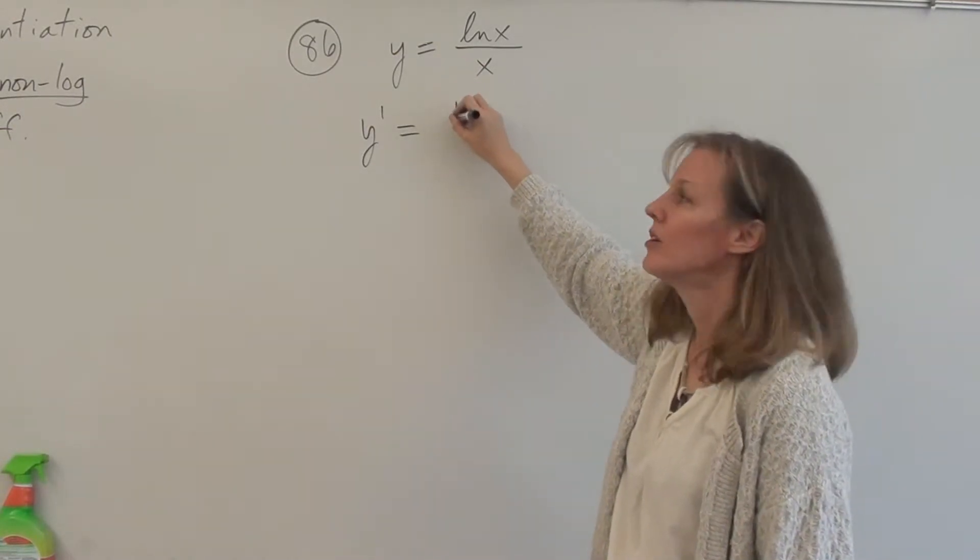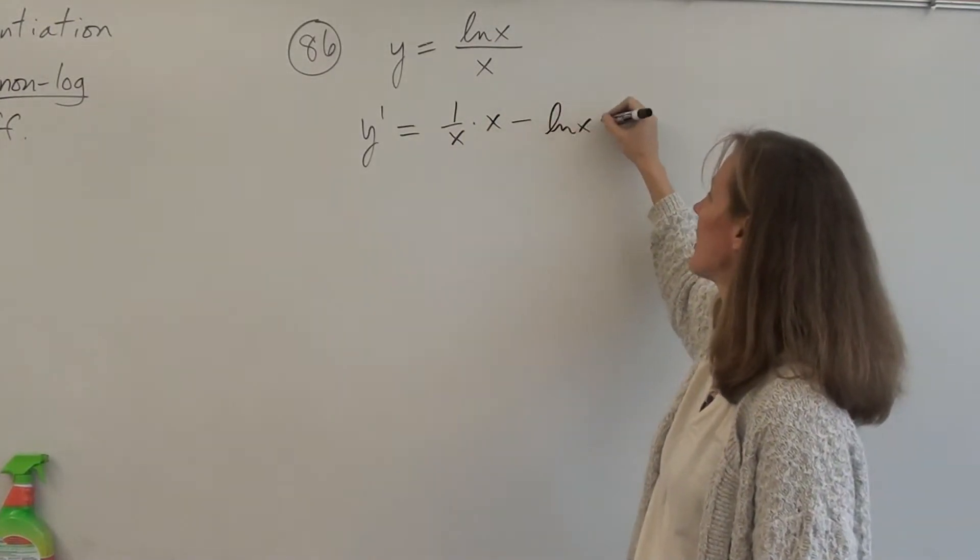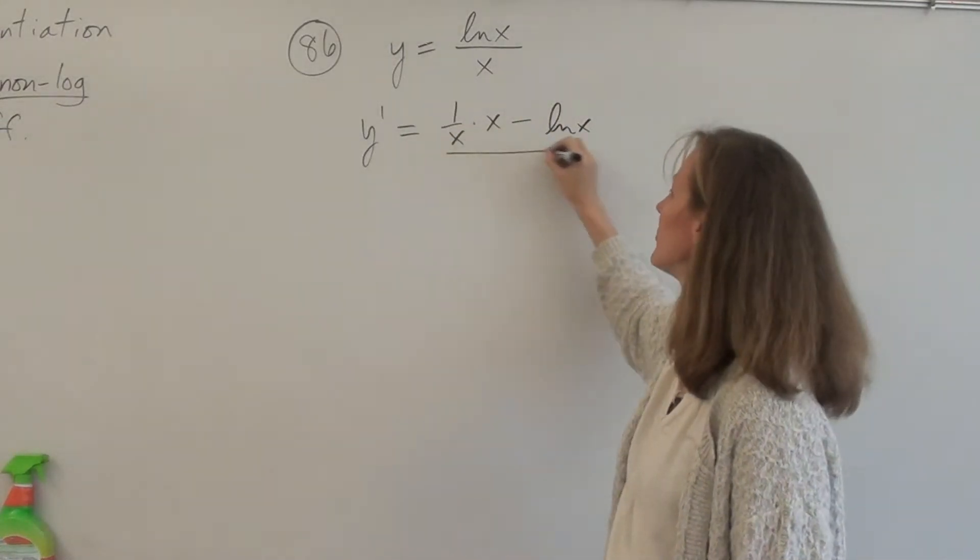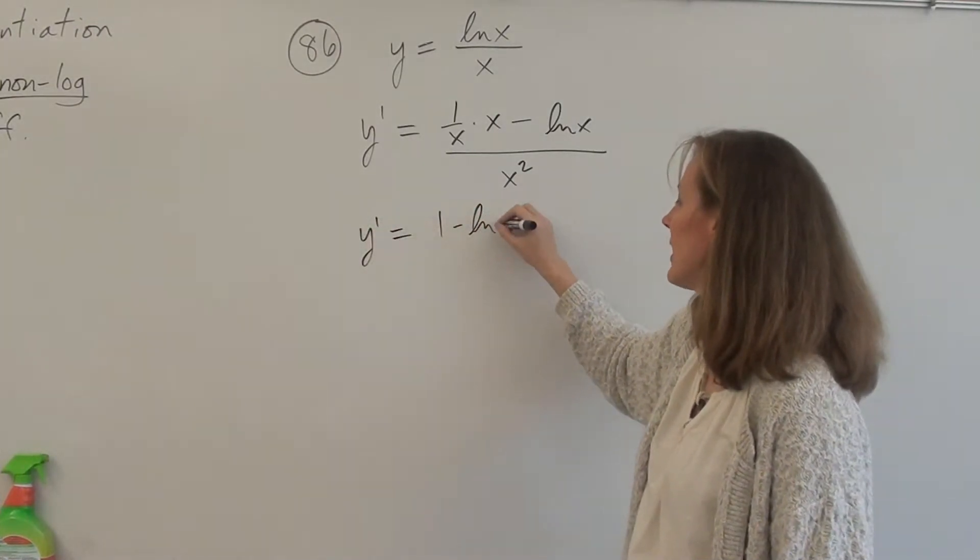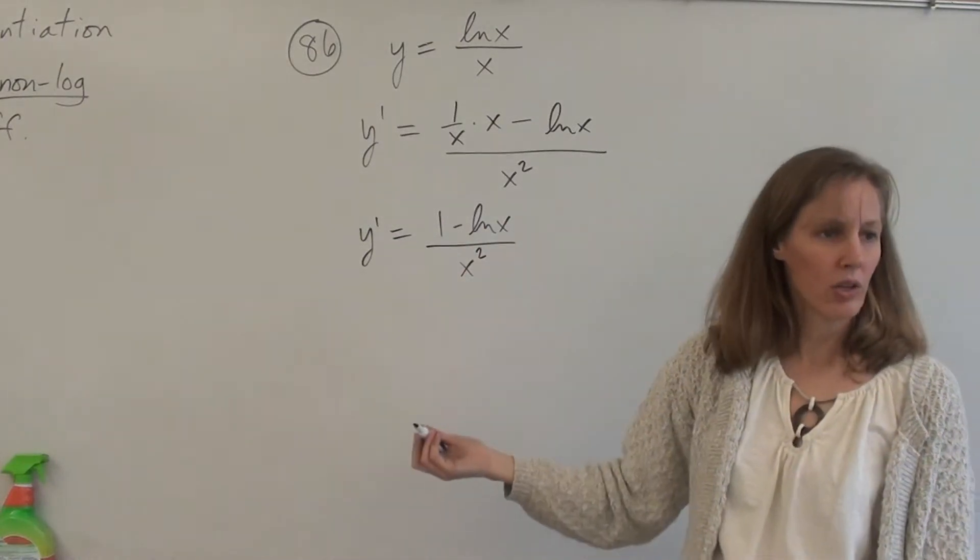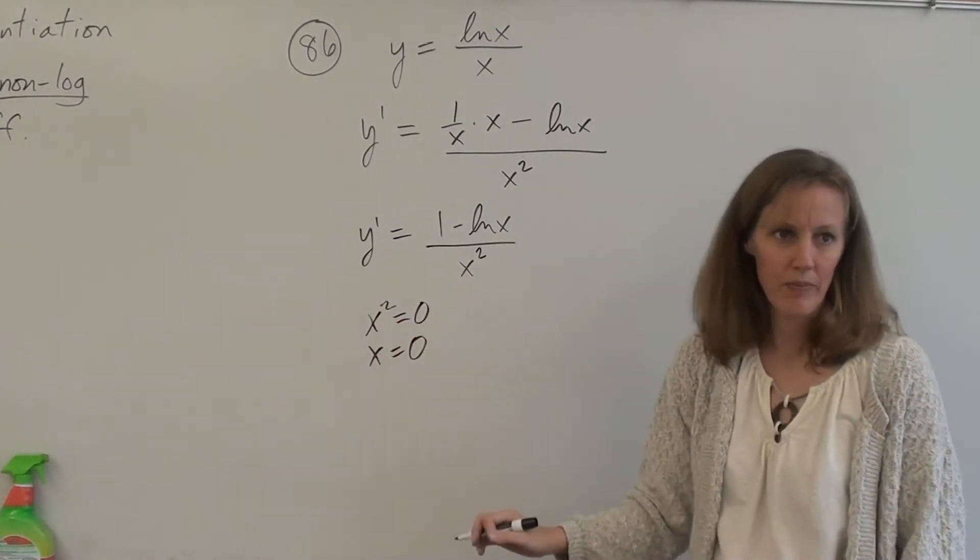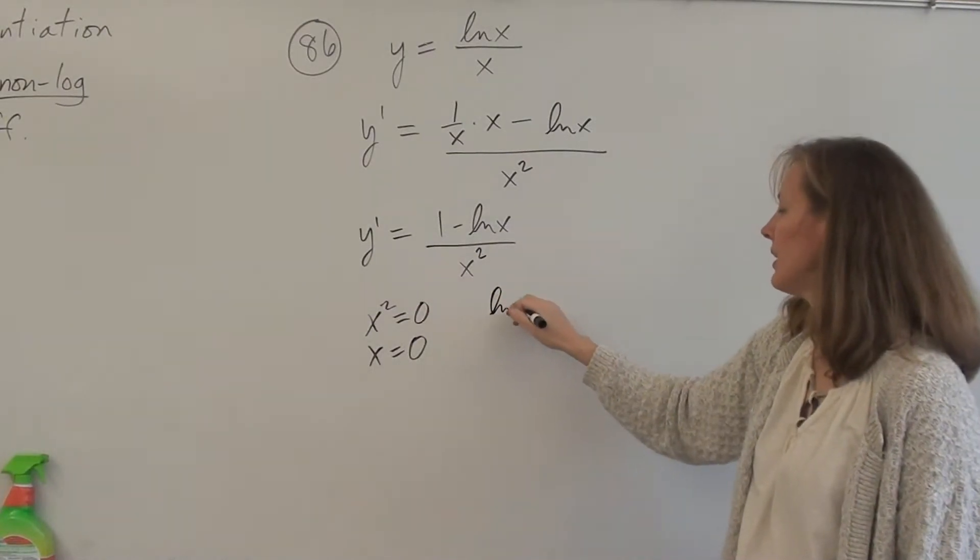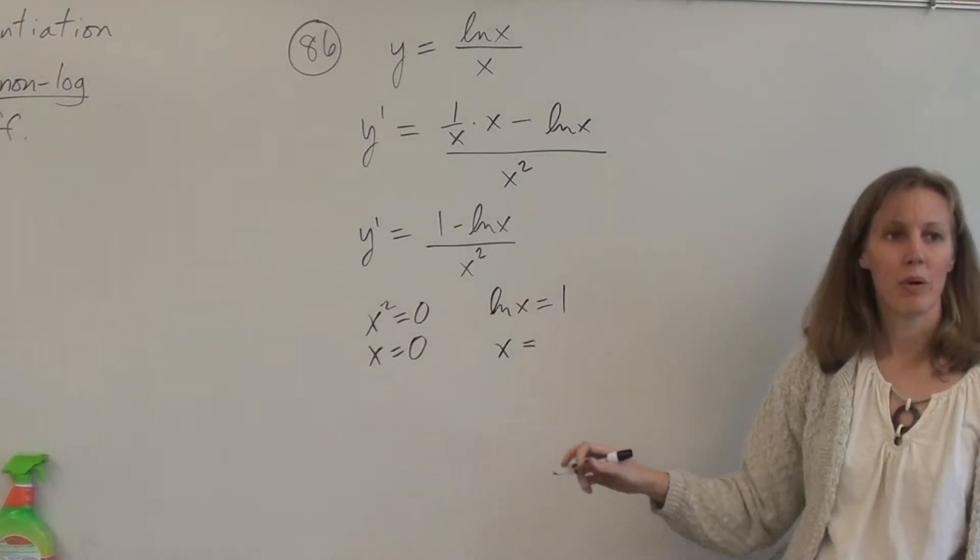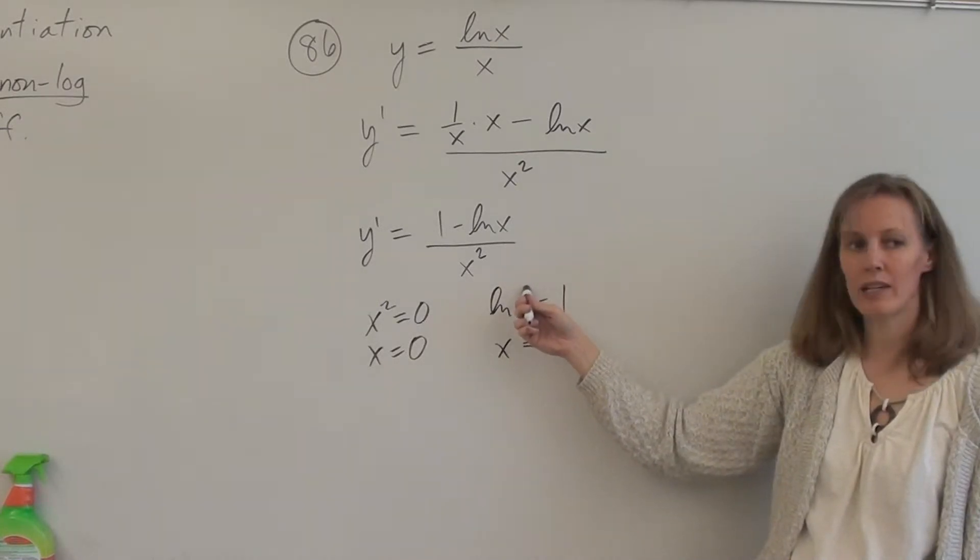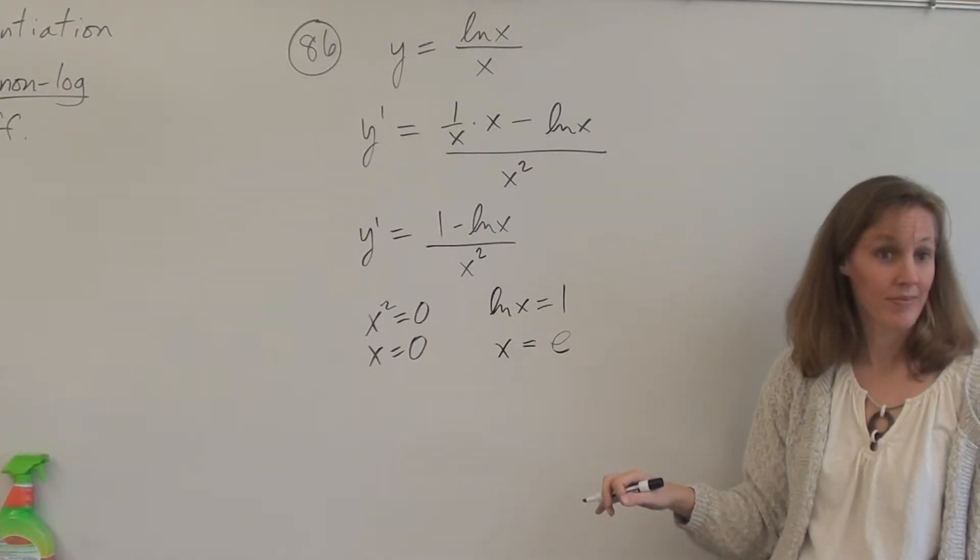So the derivative of the top is what? What's the derivative of ln x? 1 over x times x minus ln x times 1, all over x squared. So when we clean it up, we get 1 minus ln x all over x squared. Okay, critical numbers. Well, obviously if the bottom is 0, we get x equals 0. That's where the derivative is undefined. That would be a problem. The top, we get ln x equals 1. What does x need to be? Remember, this to this equals this. E to the first equals x, so x is e.